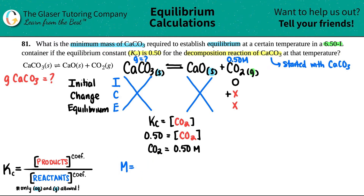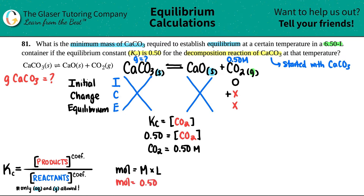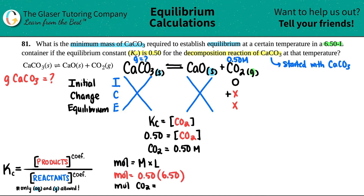Rearranging the formula: moles equals molarity times liters. So moles equals 0.50 times 6.50, which gives us 3.25 moles of CO2. Now I have the right unit to use stoichiometry to go from CO2 to CaCO3.